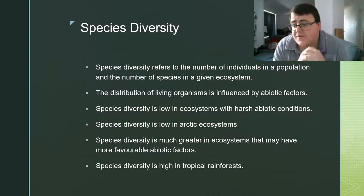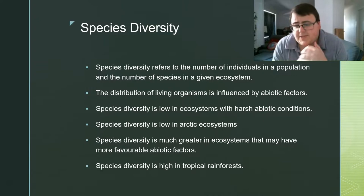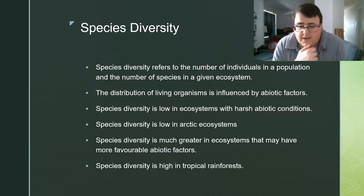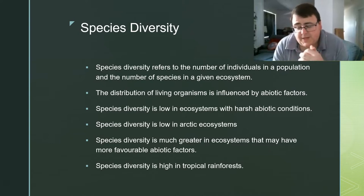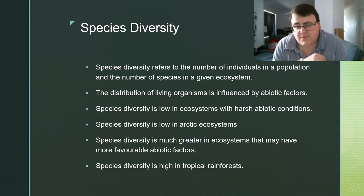Species diversity refers to the number of individuals in the population and the number of species in a given ecosystem. The distribution of living organisms is always influenced by abiotic factors and non-living factors. When species diversity is low, ecosystems are generally found to have harsh abiotic conditions and they're not going to be able to survive changes very well. For example, Arctic ecosystems have very harsh conditions - if those conditions were to change, most of the ecosystem there would collapse because there's low species diversity. Something like a tropical rainforest has very favourable conditions for all organisms, so species diversity is quite high and it's quite resistant to change.